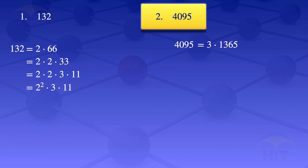We now want to find the prime factors of 1365. We start by 2 — 2 is not a factor. We try 3 — it gives us 455. So we have 3 times 3 times 455.